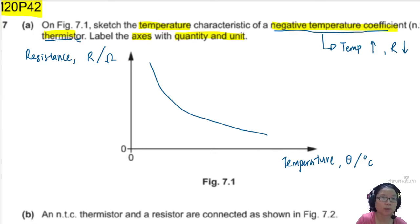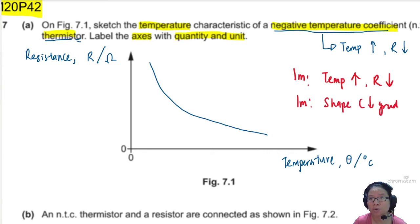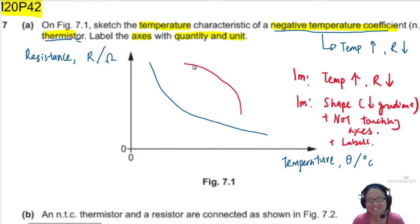So you might be wondering where's the two marks. One mark will be when temperature increase, resistance decrease. One mark will be the shape. It has to be decreasing gradient and not touching axis. And labels. So this last mark is easy to lose. Either your shape is wrong. Maybe you decide to draw this shape.